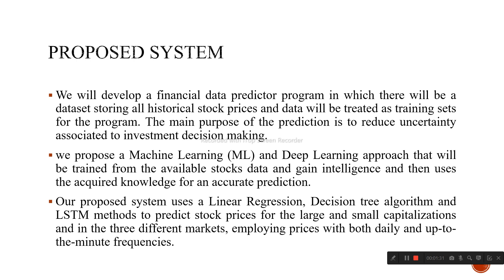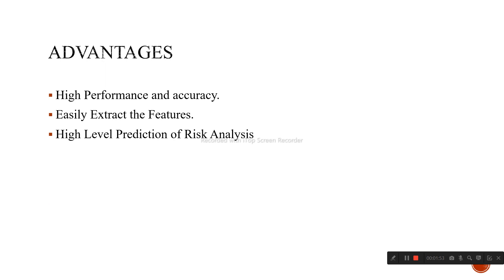In the proposed system, the prediction reduces uncertainty associated with investment decision making with the help of available stock by using machine learning and deep learning. It will be trained for accurate prediction. The system uses linear regression, decision tree algorithm, and LSTM long short-term memory to predict stocks. The advantages are high performance and accuracy, easily extract the future, and high level prediction of risk analysis.